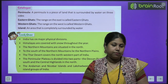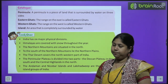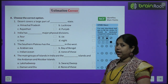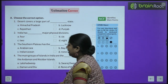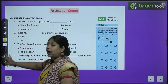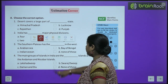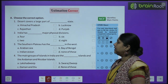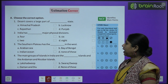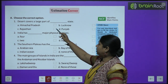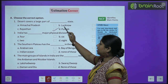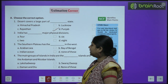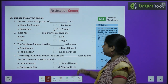Now it's time to test our knowledge — let's come to the exercises. First question: desert covers a large part of which state? Options: Himachal Pradesh, Lucknow, Punjab, Rajasthan — so Rajasthan is the correct option. Second: India has how many major physical divisions? Six major physical divisions — correct.